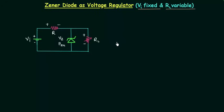The first thing is to find out the condition for minimum load resistance and the second thing is to find out the condition for maximum load resistance, because load resistance is varying. Vi is the input voltage, R is the current limiting resistance, and voltage across R is VR. RL is the varying load and voltage across RL is VL. Vz is the Zener potential or Zener voltage. Pzm is the maximum power dissipation capability of the Zener diode.